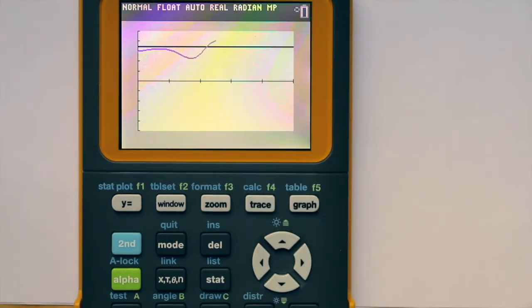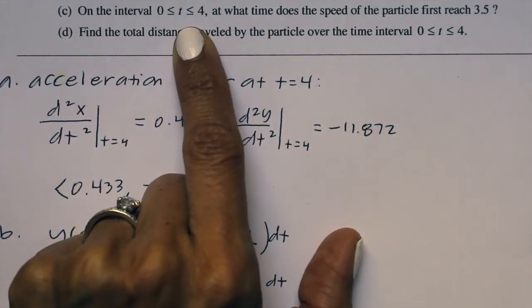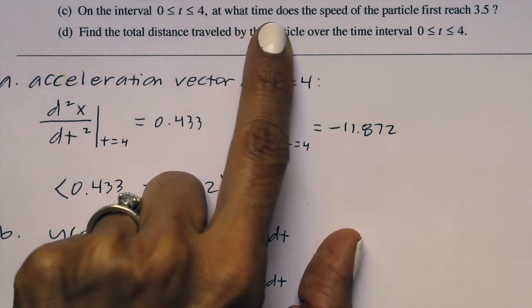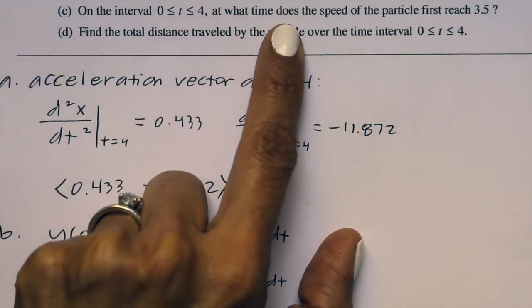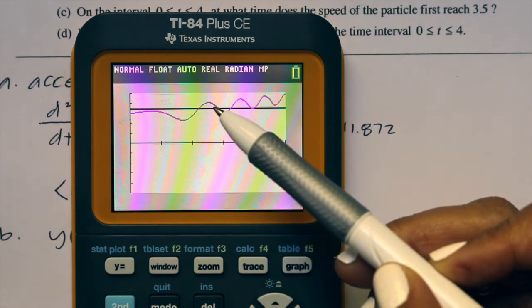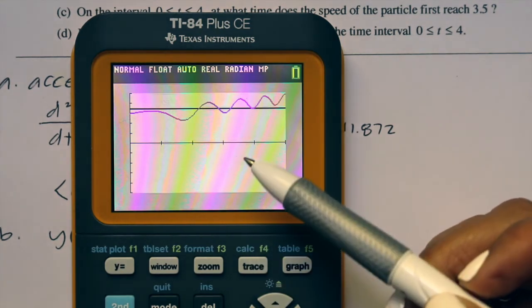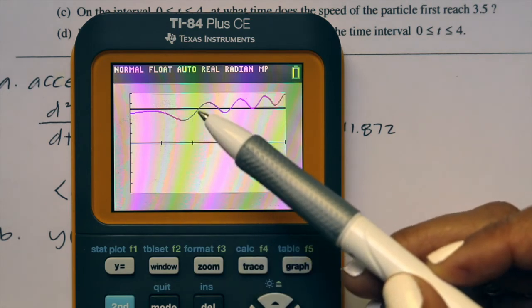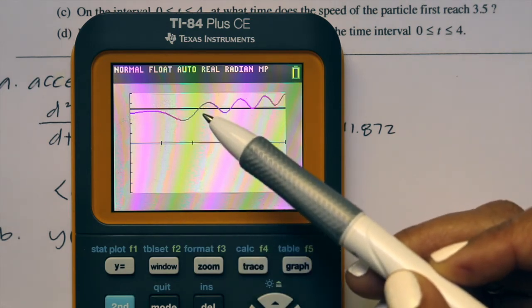When we hit graph, we can find the intersection of these two. We're looking for where these two graphs intersect between 0 and 4. The problem says, on the interval from 0 to 4, at what time does the speed of the particle first reach 3.5? We can see the two graphs intersect here and here and here, but it says where they first reach, so that would be this intersection right here.